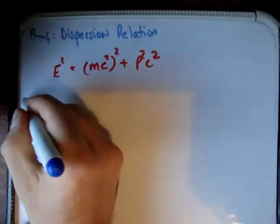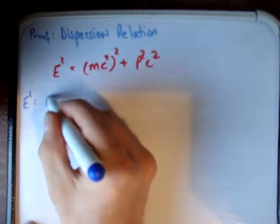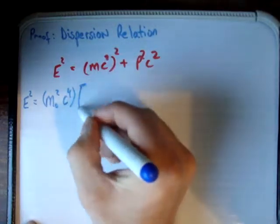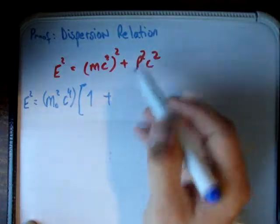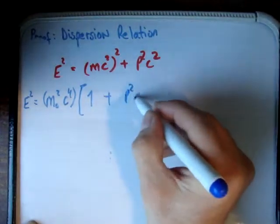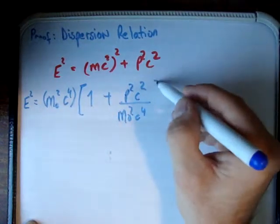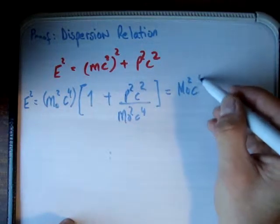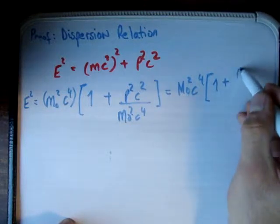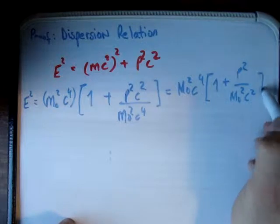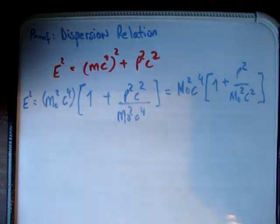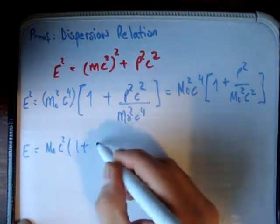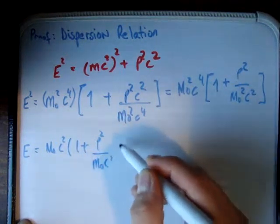The next thing we do is manipulate this formula. We find that E squared is equal to m₀ squared c to the fourth, pulling out that factor, multiplied by 1 plus p squared c squared over m₀ squared c to the fourth — which simplifies to m₀ squared c to the fourth times 1 plus p squared over m₀ squared c squared. Finally, E is equal to m₀c² times the square root of 1 plus p squared over m₀c squared.